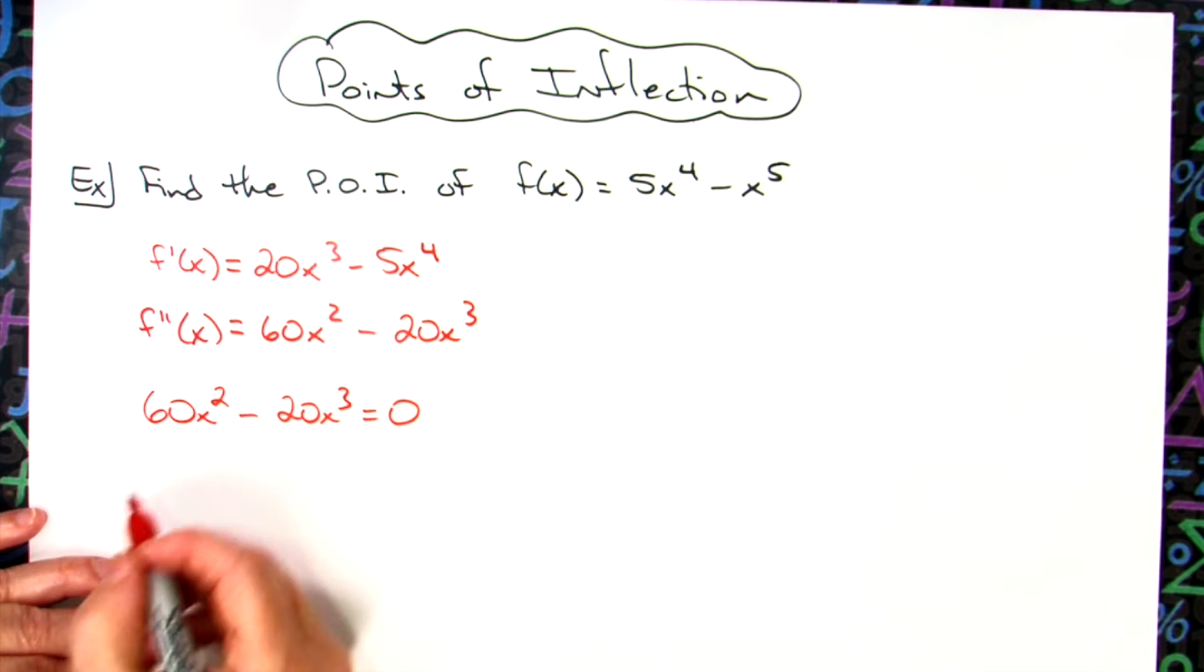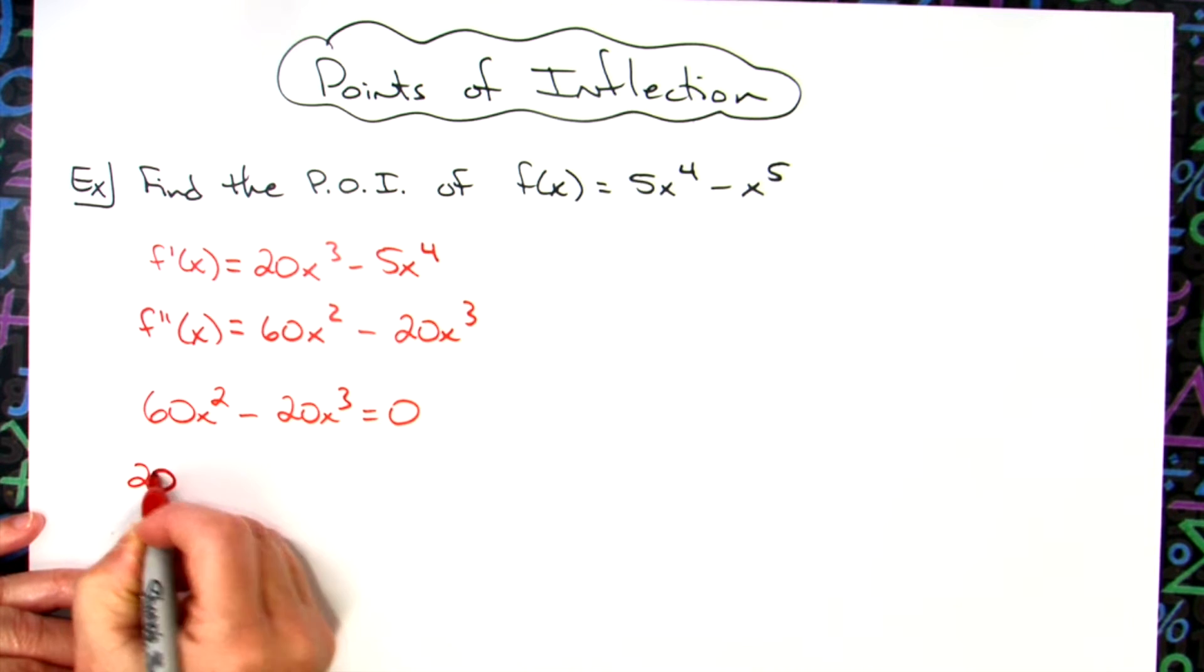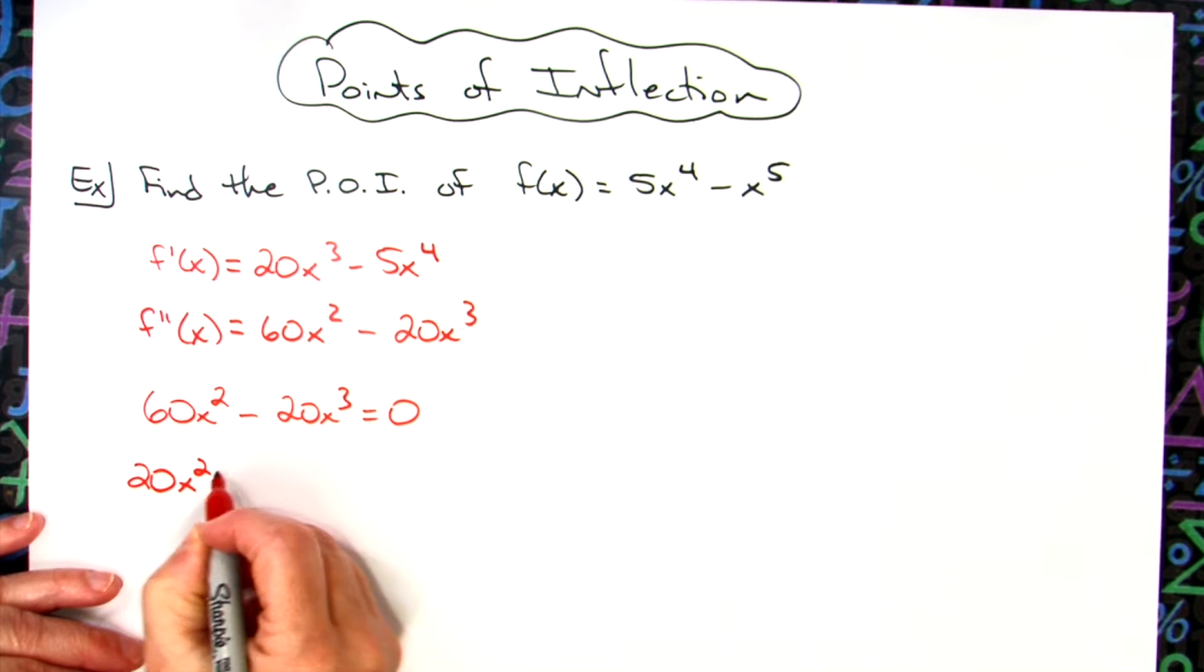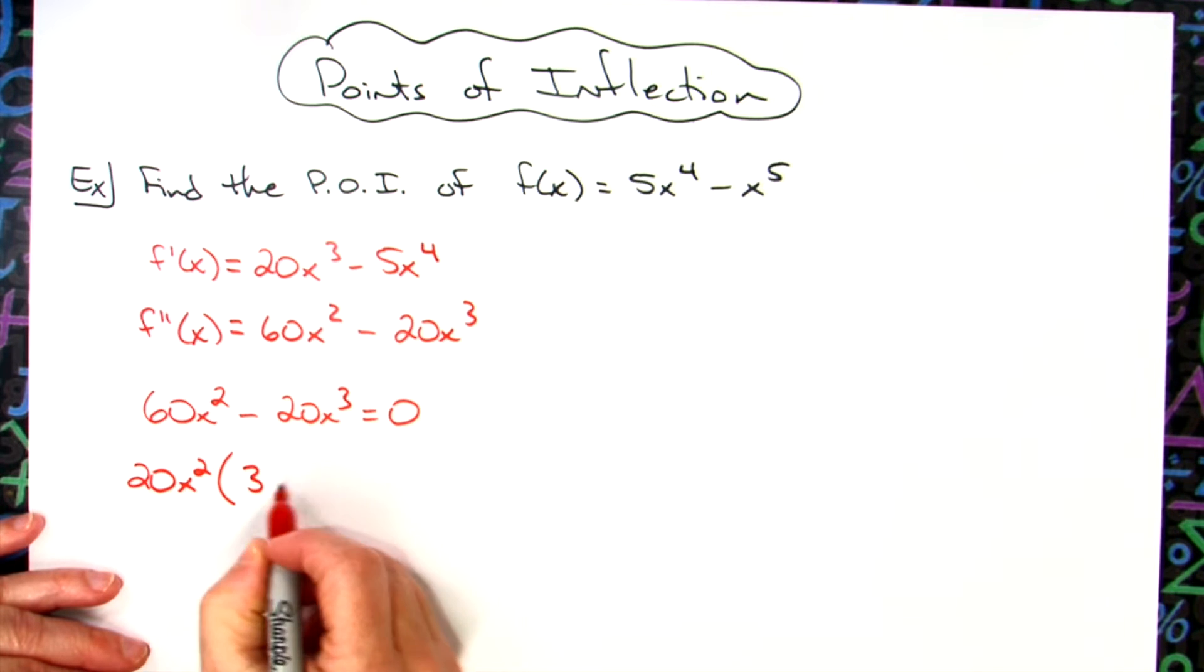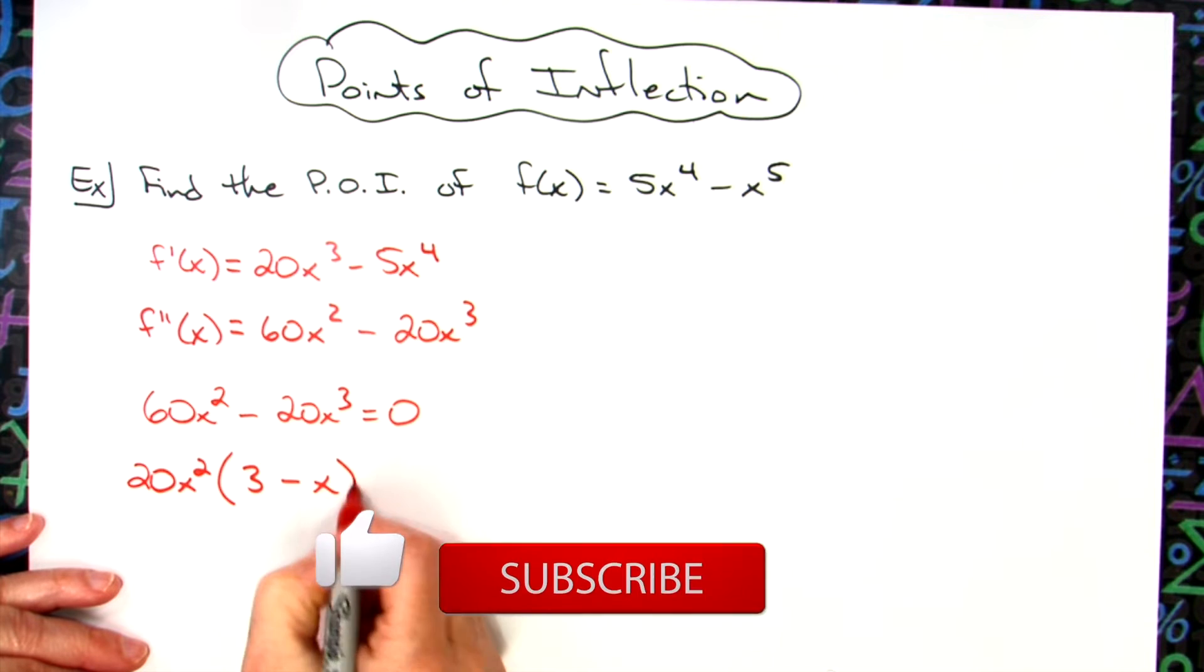Let's go ahead and factor out a greatest common factor. That'll be 20x². Taking that out, we're going to be left with 3 and then minus x.